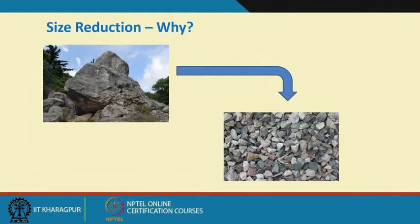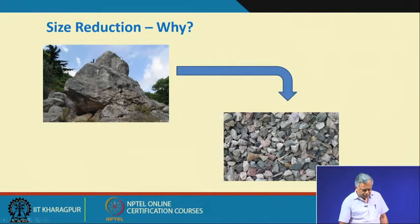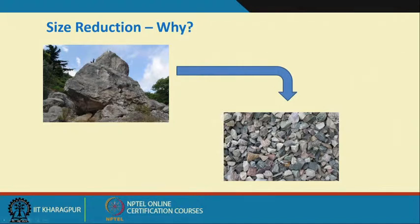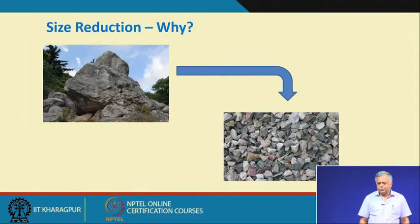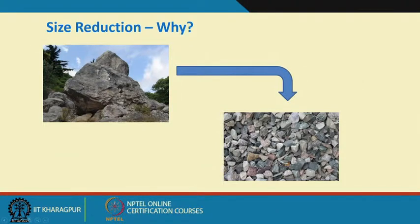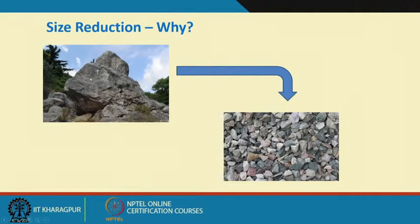The first question is: why size reduction? Think of a single rock — my geologists say it has some valuable metal-bearing ore, having around 1 percent of that material. As we discussed, we try to do physical separation based on physical property differences. So we have to break this particle for liberating the wanted and unwanted particles.